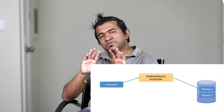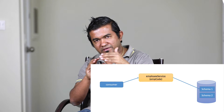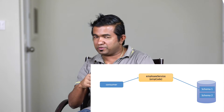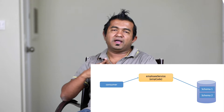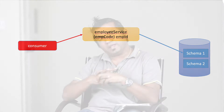That consumer will pass employee code. For version two or the new service, you need to pass employee ID. If you deploy your service into production — if you update your current service — in the meantime, your consumers will break. Why? Because they don't know how to pass employee ID. So what you can do is, here is the place where the proxy pattern will fit.